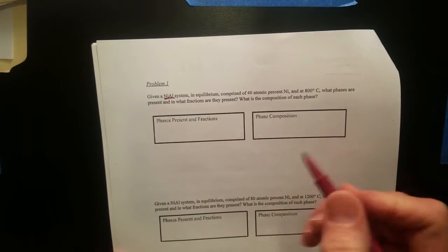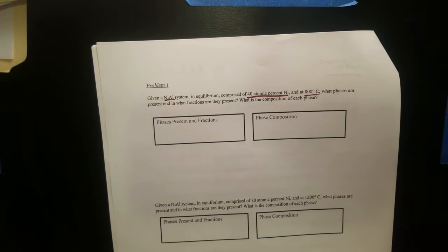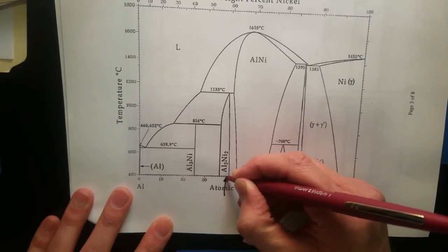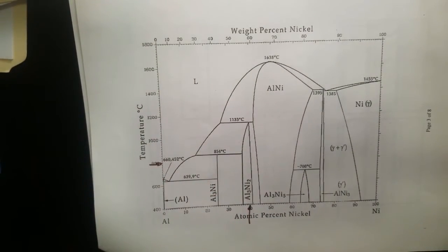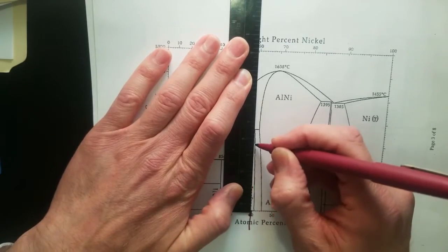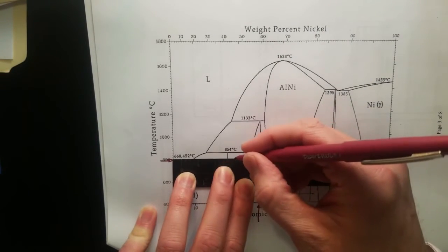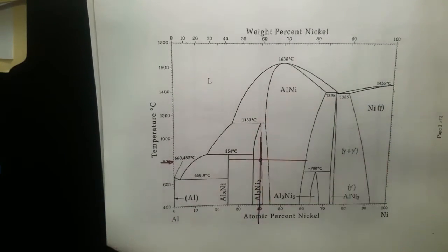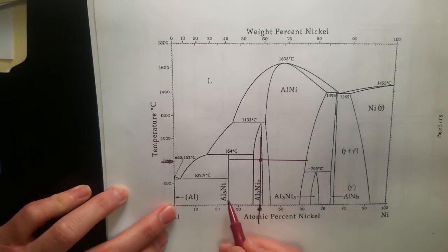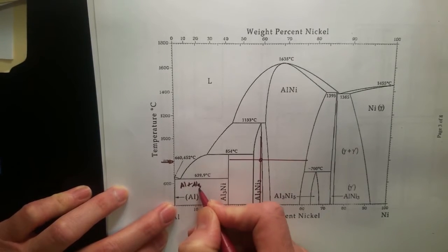We've got nickel aluminum, 40 atomic percent nickel at 800 degrees C. What are the phases present and their compositions? 40 atomic percent nickel, 800 degrees C. So I'm going to draw a vertical line and horizontal line. This is where we're at. We have aluminum, that is a very thin slice here. We have AL3NI. That makes this a two-phase region.